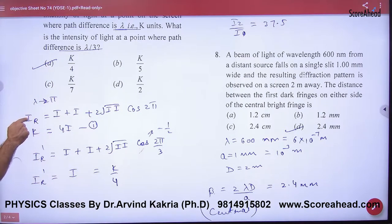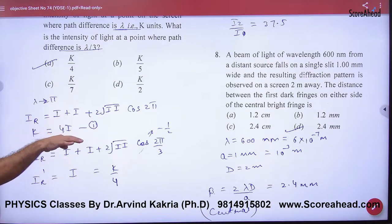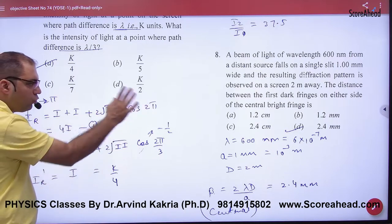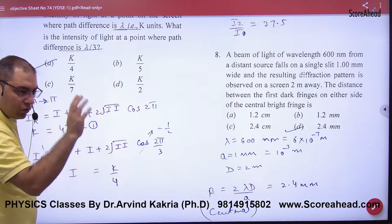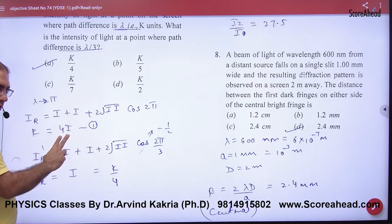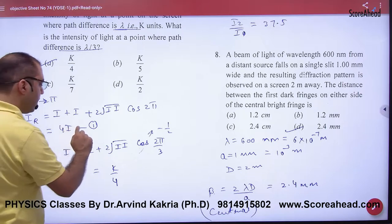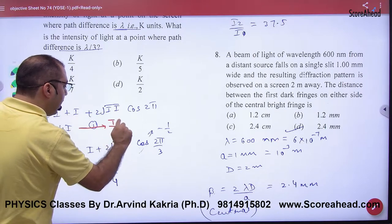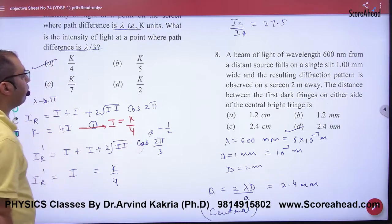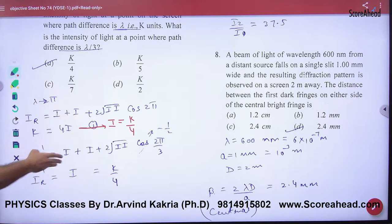Now, the resultant intensity is k. If you use this, then the cos of 2pi value is 1. So solve it, what is 4i? And the resultant intensity is k. Equation number 1. Keep this equation number 1. So this equation means that where I will have the need of i, then what will I put? k by 4.